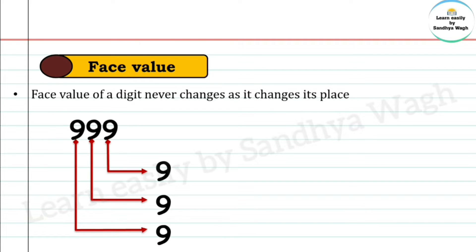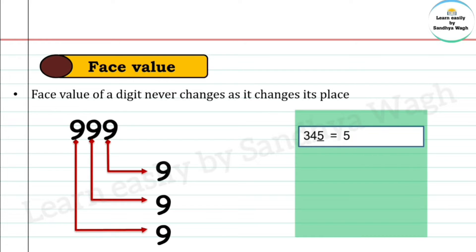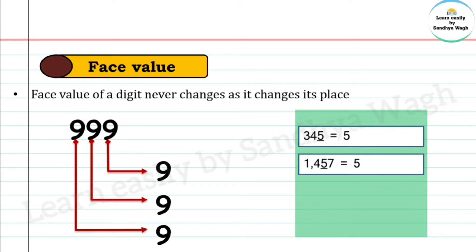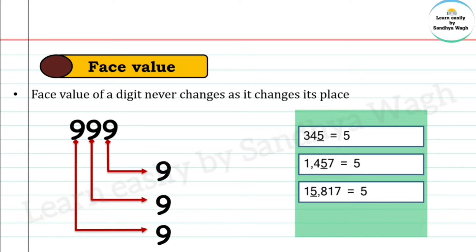In number 345, the face value of 5 is 5. In number 1457, the digit 5 is in the tens place, and its face value is still 5.